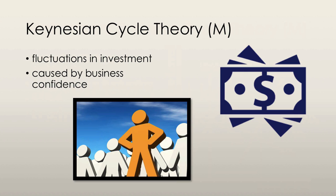Keynesian cycle theory is one of the mainstream business cycle theories. It states that fluctuations in investment are driven by fluctuations in business confidence. When a business's confidence in its future prospects increases, it can undertake more investment, and vice versa. It is investment that causes aggregate demand to fluctuate, according to Keynesian cycle theory.